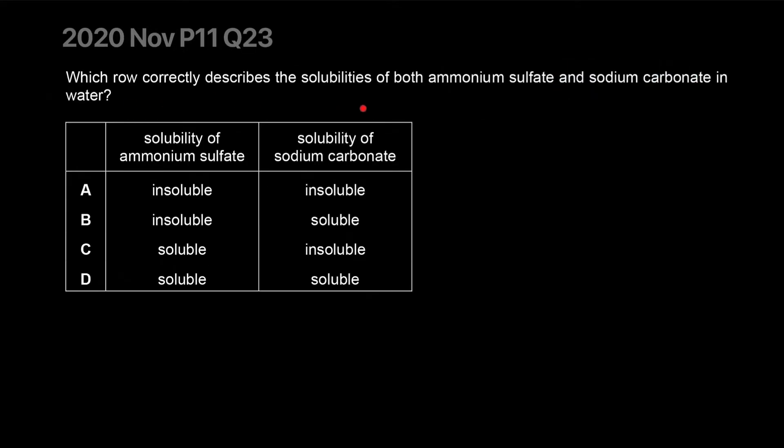Which row correctly describes the solubilities of both ammonium sulfate and sodium carbonate in water? Both are soluble. Ammonium sulfate is in fertilizer. And sodium carbonate is known to be a soluble carbonate. Correct answer is D.